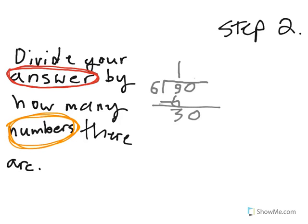6 goes into 30 how many times? 5 times. So, put the 5 up there and put the 30 down here. Subtract. You're left with a total of 0 remainders.